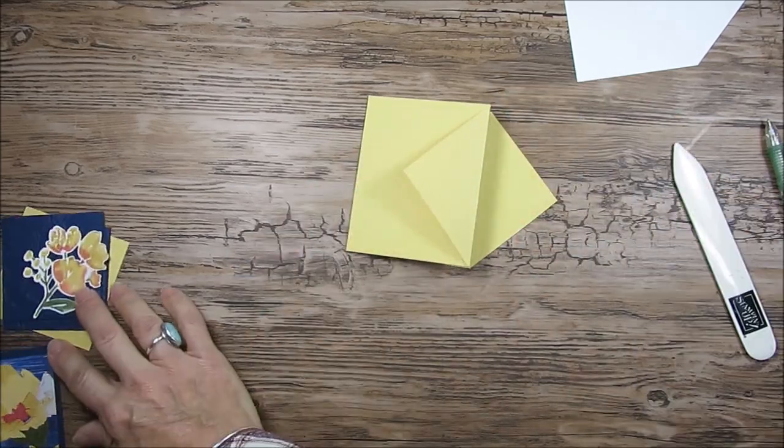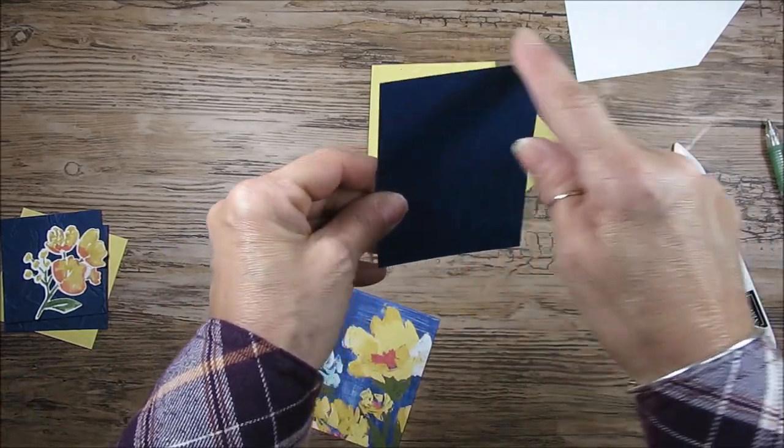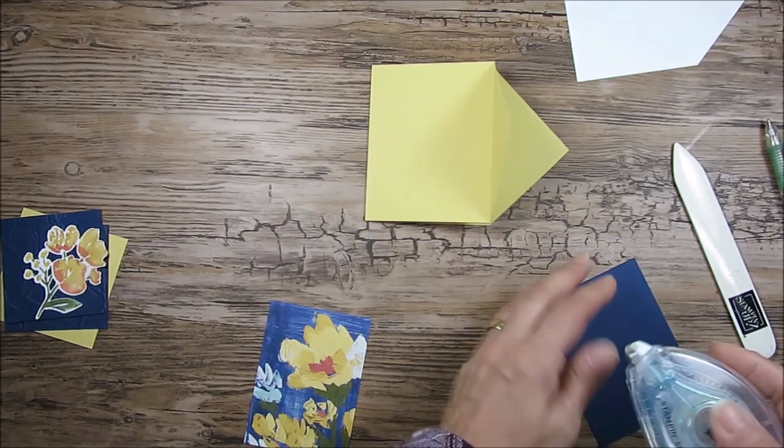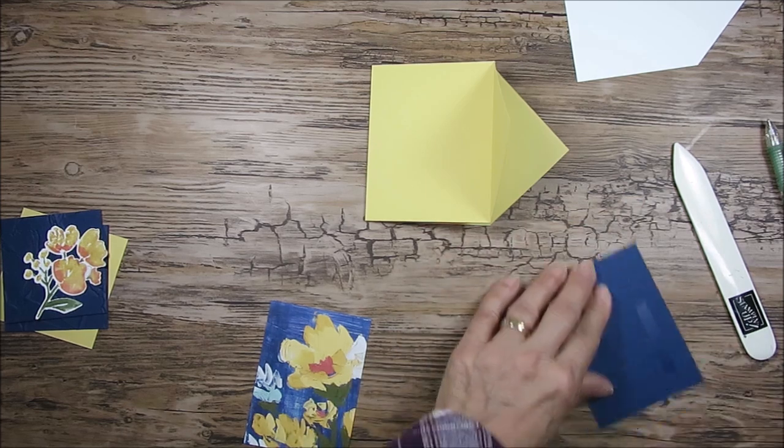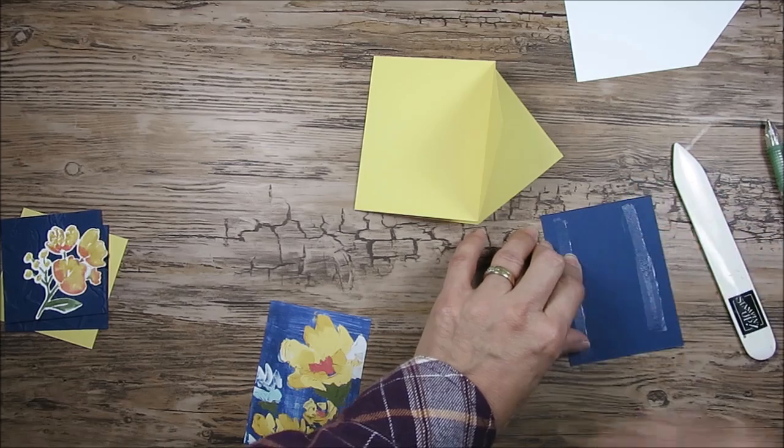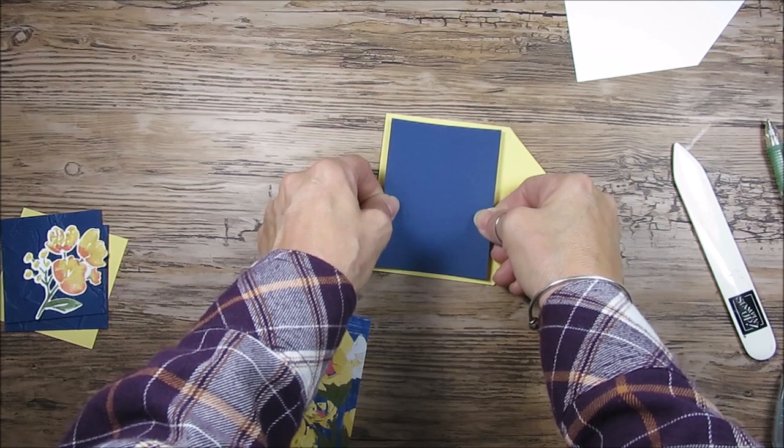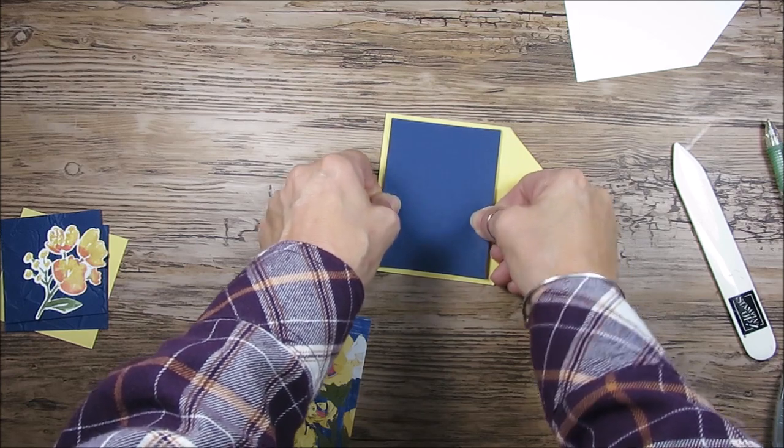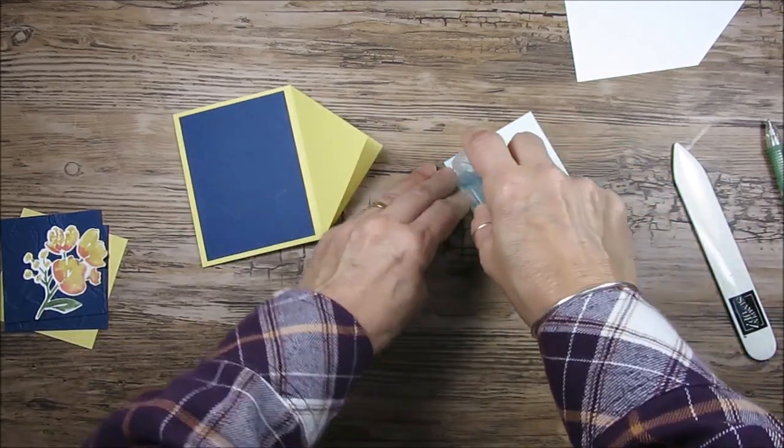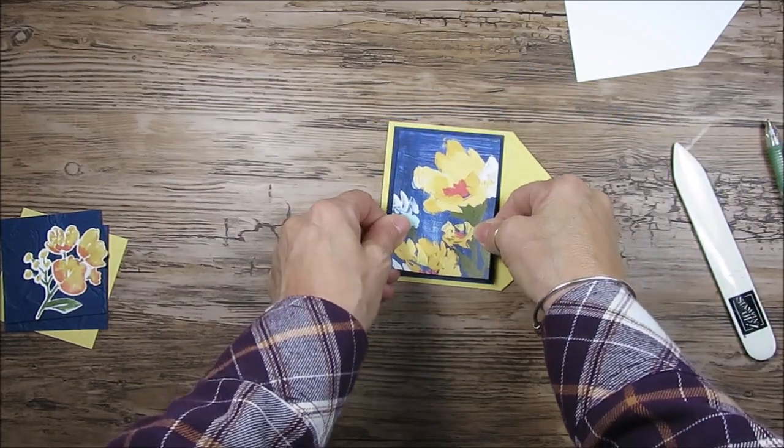Now for right here the piece that goes here, you're going to take a piece that measures three by four. This is Knight of Navy, three by four. And then our designer series paper measures two and three quarter by three and three quarter. We're going to place that right here.